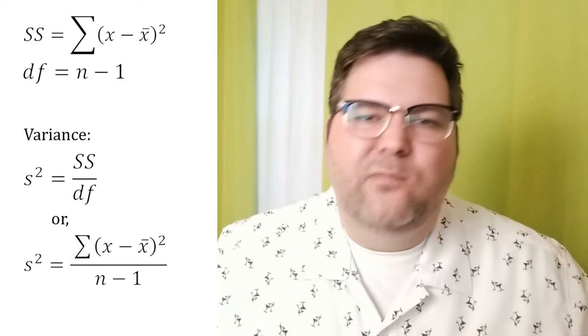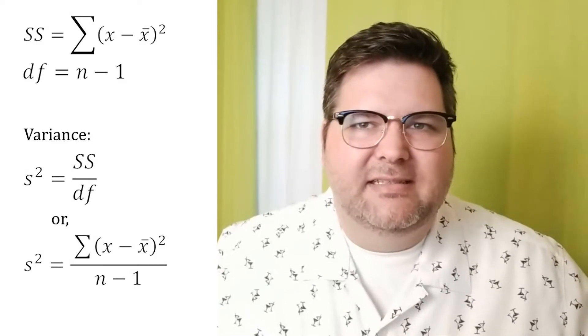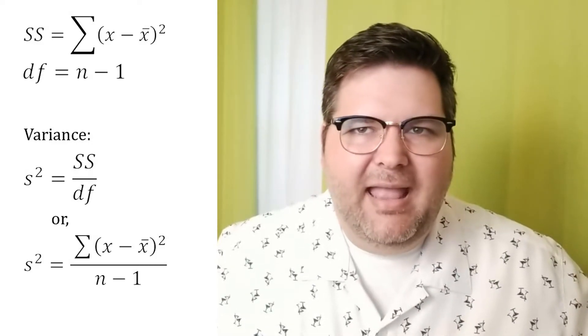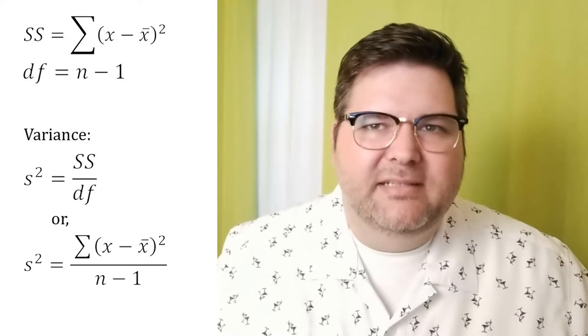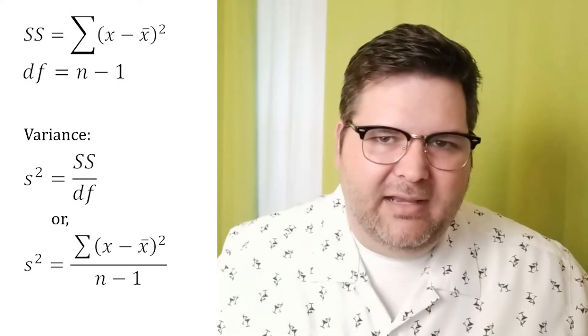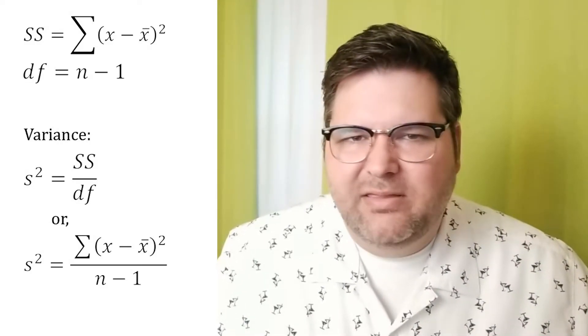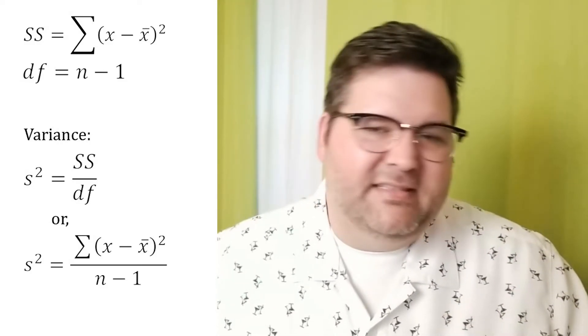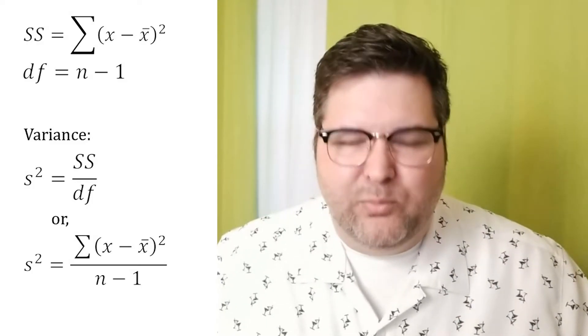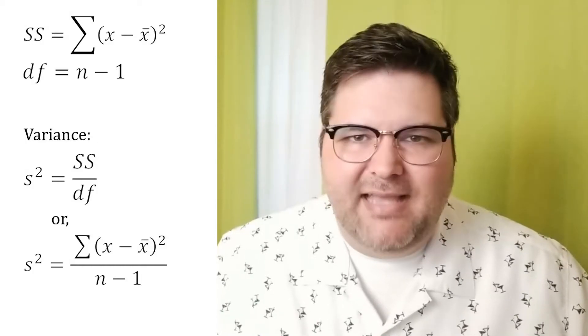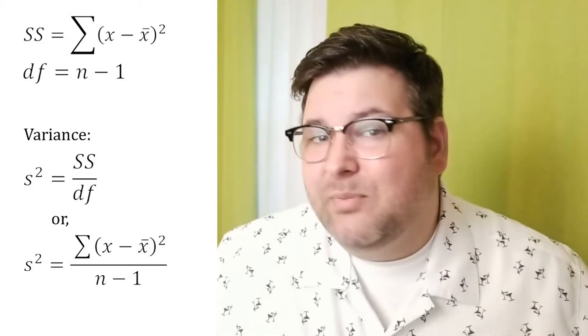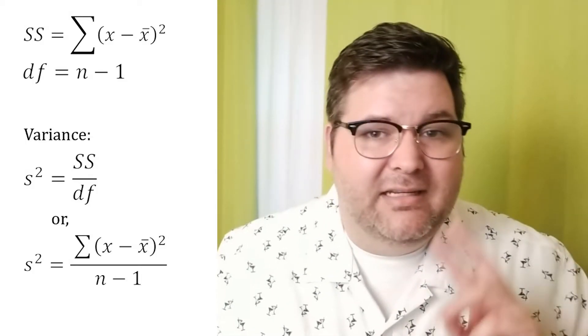So if we look at the formula for a sum of squares, it's sum of or sigma x minus x-bar squared. The degrees of freedom is simply n or the sample size minus one. Now, of course, you know that the variance is simply the sum of squares divided by the degrees of freedom. So if I want to symbolize my variance as s-squared, I can represent the formula for s-squared in two ways.